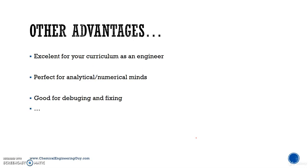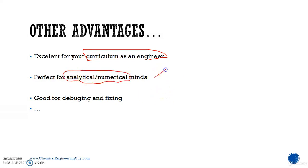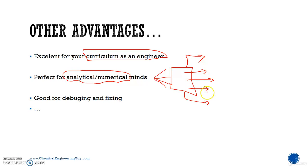Having a curriculum in simulation makes you a better engineer, especially if you're going into process engineering — it's almost a must. It's also good for analytical and numerical minds, because you can separate, distribute, and split a problem, understand plant composition, how it can be modeled and changed. It's also good for debugging and fixing: you can debug on the simulation, and if it works there, hopefully it works in real life. That's why we use chemical process simulation.